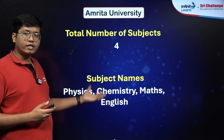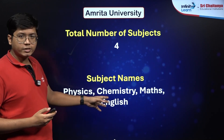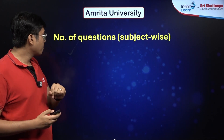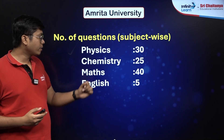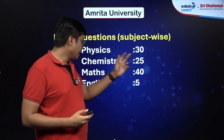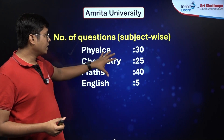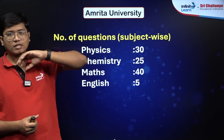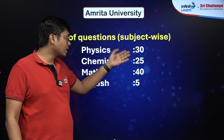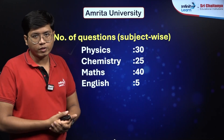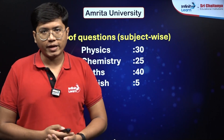You also have English as one of the subjects. You would have 30 questions from Physics, 25 from Chemistry, 40 from Maths, and 5 questions from English. As you can see, the weightage is different for each subject. Maximum weightage is given to Maths, then Physics, and finally Chemistry, with the fewest questions coming from English.